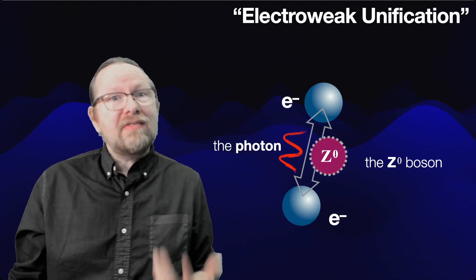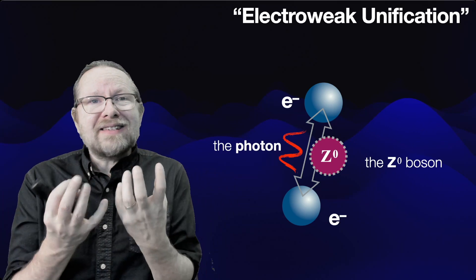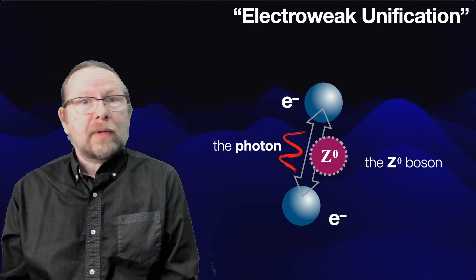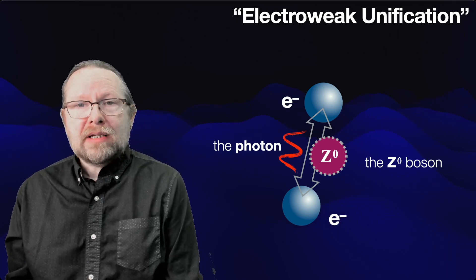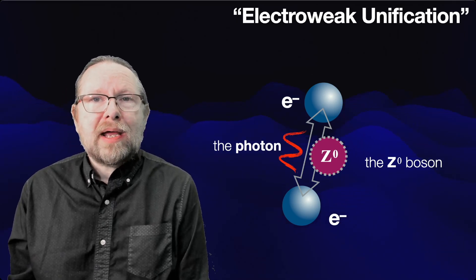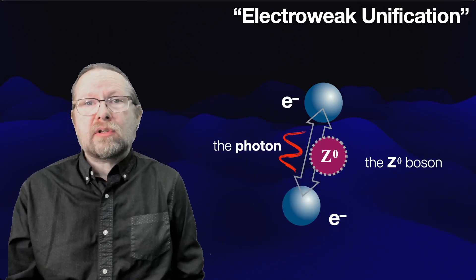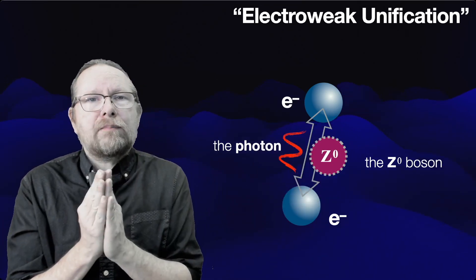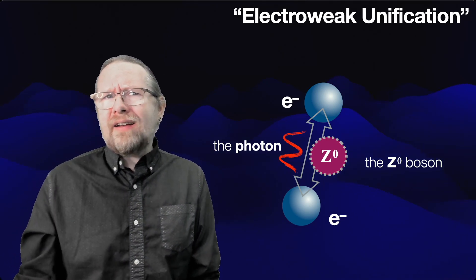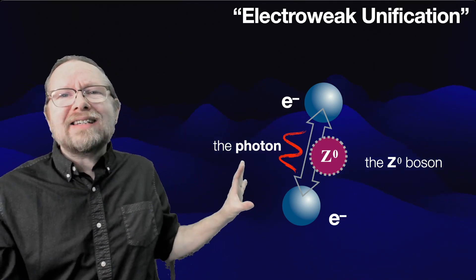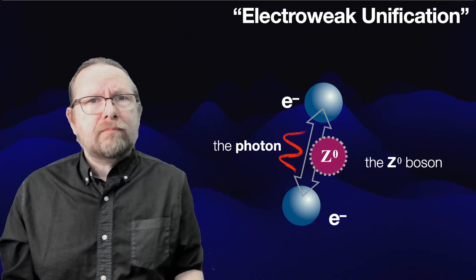Electroweak unification is important for us because we're talking about the very early universe — the instant a microsecond after the Big Bang. A microsecond after the Big Bang, all particles had a lot of energy. So if unification is true, a nanosecond after the Big Bang we can treat the electromagnetic and weak forces as one single force acting on electrons, neutrinos, quarks, and all the other particles in the universe. We'll come back to this idea of unification as we discuss unanswered questions in particle physics.